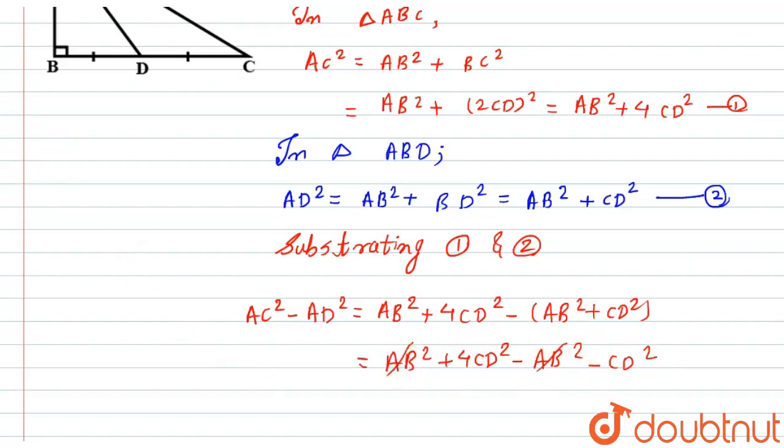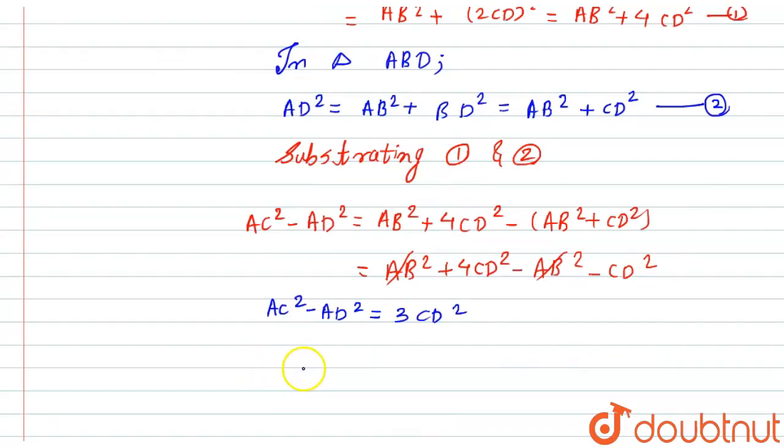And here I will get the expression AC² minus AD² equals 3CD². So AC² equals 3CD² plus AD². Hence it is proved, which we have to prove.